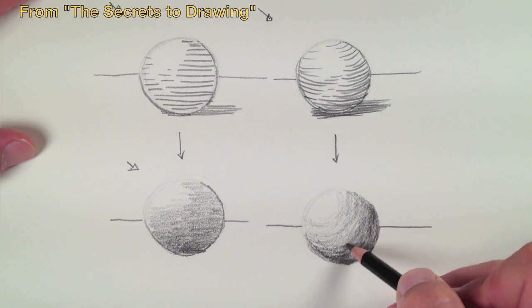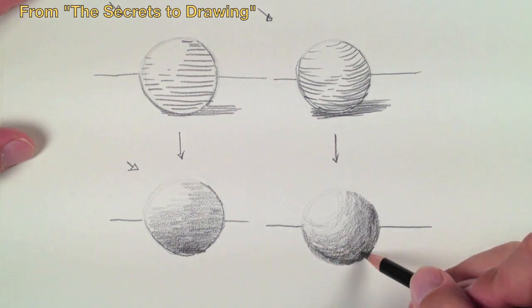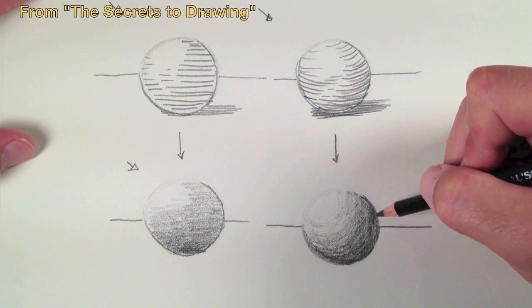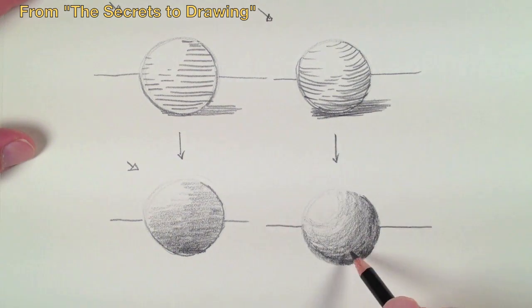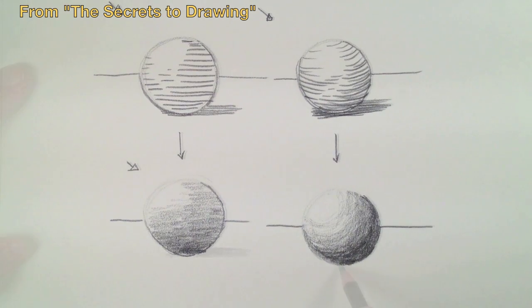Now, in this example, I'm using graphite in a pencil, but this is true in any other medium. In fact, it works in painting as well. Cross contour lines are very important in creating the illusion that you are desiring, yet so many people don't even know about them, but you do now.